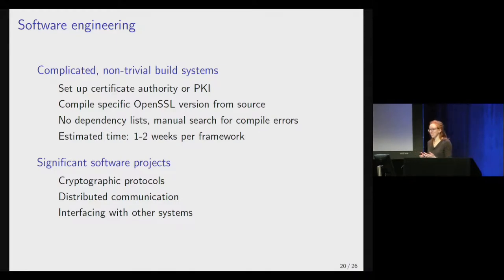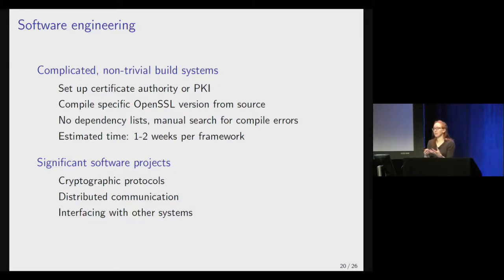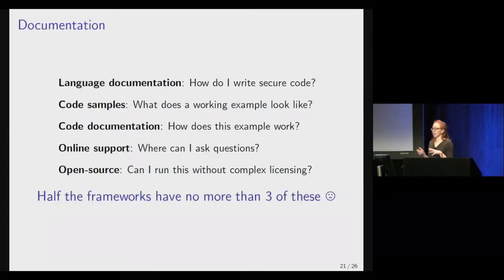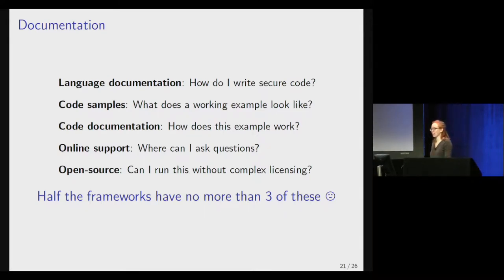In addition to implementing cryptographic protocols — which is notoriously difficult to do correctly — there are a ton of supporting systems required to make an MPC framework work. You have to implement distributed communication between multiple parties, interface with other systems, and if you write a domain-specific language, you have to have a way for it to get input from and return output to a general-purpose language. The other major issue we found is a major lack of documentation. We defined five types of documentation that we looked for, and half the frameworks had no more than three of these.